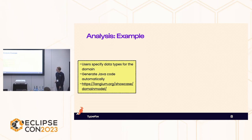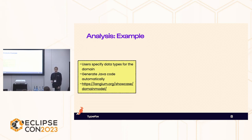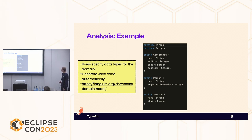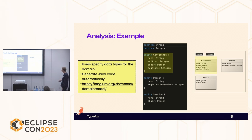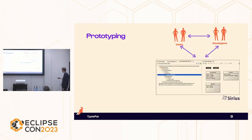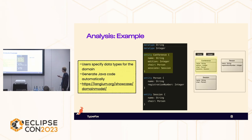Let's look at an easy example — a domain model for types, which is an excerpt from one of the available showcases. The intent of users is to model required data types when developing information systems, with source code generated for programmers afterwards. They want to model entities for conferences, persons, and sessions with data attributes. Some users said they'd prefer a graphical representation, and we see it's also possible to model the same information graphically — so a conference entity can be represented both textually and graphically with the same attributes.